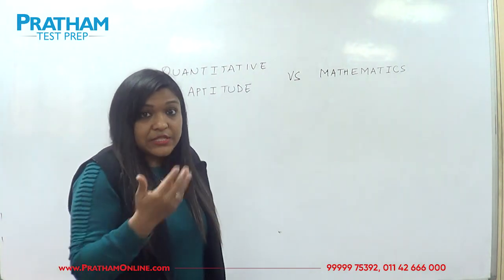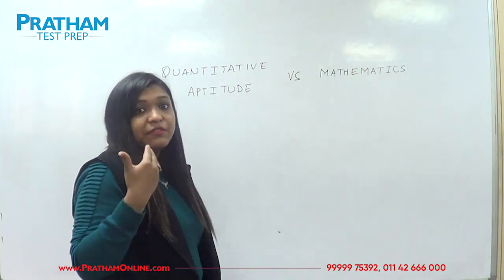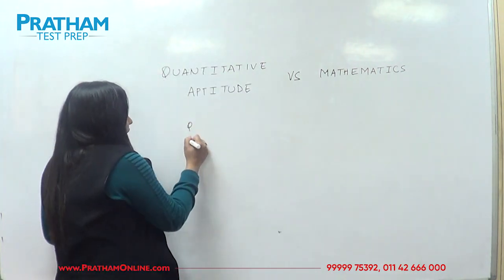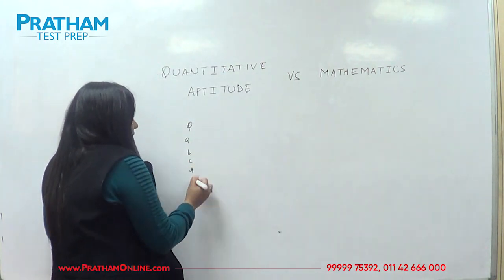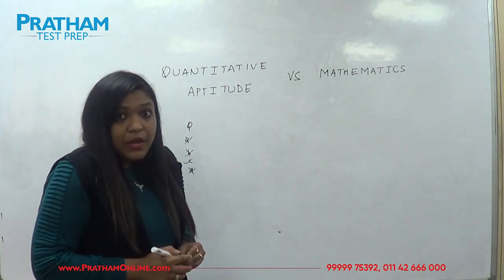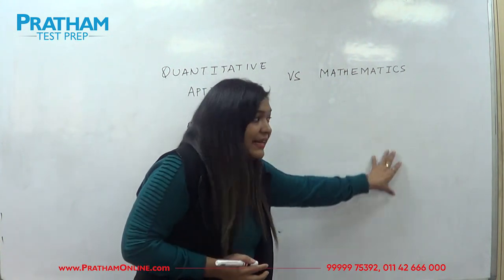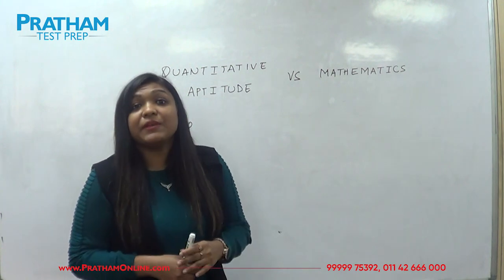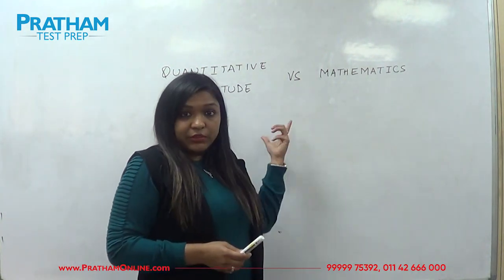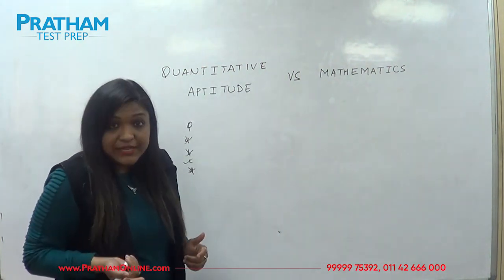When we solve questions in quantitative aptitude, we use majorly the elimination method. Why? Because there is a question and we have four options, so we eliminate the options and get the right answer. But for the same thing in mathematics, we solve the entire question — maybe a half page or a one page long answer. In both techniques, the answer is the same, but the approach is different.